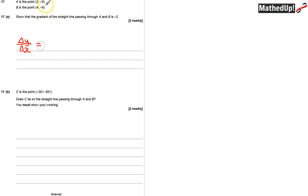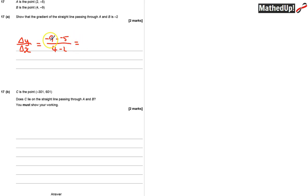That's going to be equal to: the change in Y is going to be negative 9 take away negative 5, and the change in X is going to be 4 take away 2. That's equal to negative 9 take away negative 5, which is the same as negative 9 plus 5, which is negative 4. And 4 take away 2 is 2. So negative 4 divided by 2 is equal to negative 2.